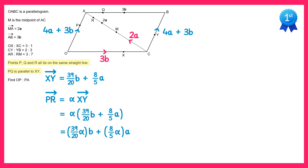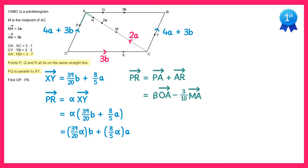Now we'll consider another way of going from P to R: going from P to A, and then from A to R — so PA plus AR. Vector PA must be parallel to vector OA since they're on the same line. We know vector OA, so we replace PA with some multiple beta of OA. For vector AR, using the given ratio of AR to RM of 3 to 7, getting from A to R is 3 tenths of the way along AM — but in the opposite direction of vector MA — so we subtract 3 tenths of MA. OA was 4A plus 3B, and MA is 2A.